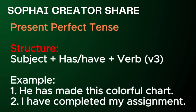Present perfect tense. Structure: Subject plus has or have, plus verb V3. Examples: 1. He has made this colorful chart. 2. I have completed my assignment.